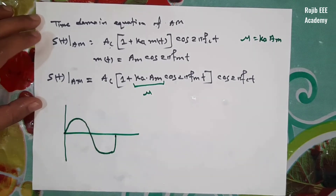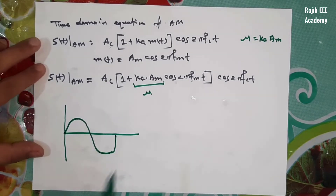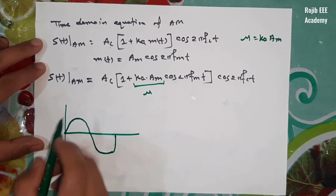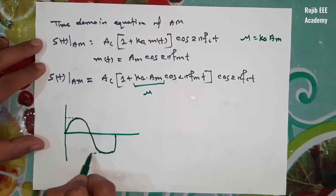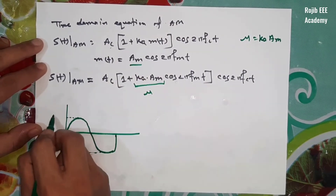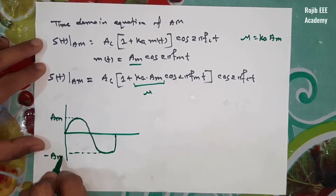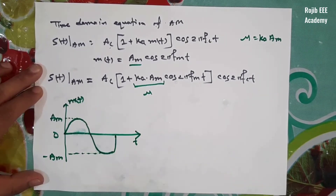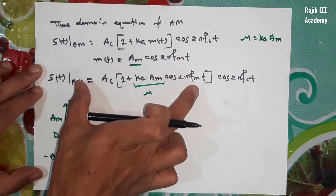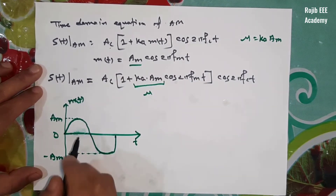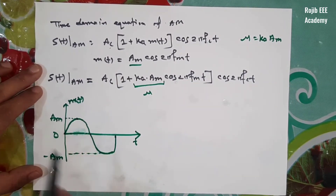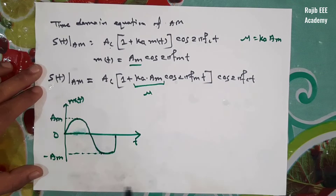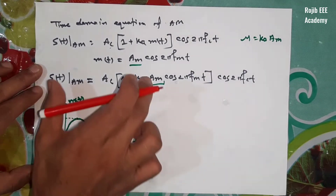Now we can do the AM waveform here, which is AM. This is the modulated signal. This is the peak value. We can see that this modulated signal has a peak value.